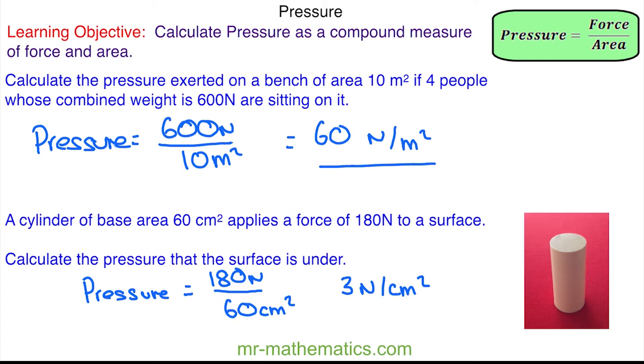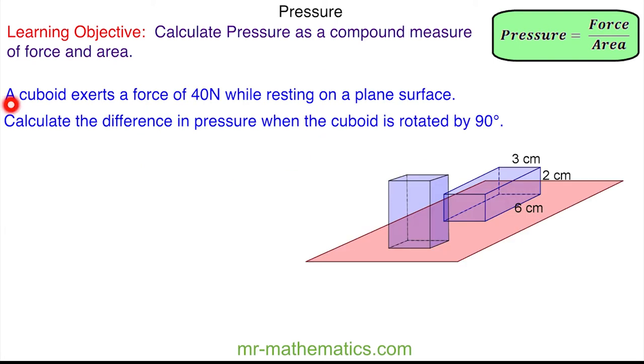In this question, a cuboid exerts a force of 40 N while resting on a plane surface, and we're asked to calculate the difference in pressure when the cuboid is rotated by 90 degrees. So here we have the surface which is red, and to begin with the pressure is exerted in this area here, and then it is rotated so the pressure is exerted through this area.